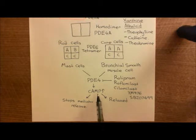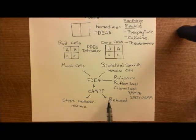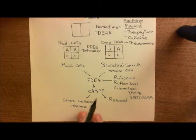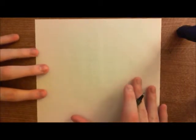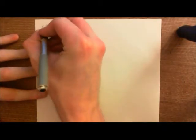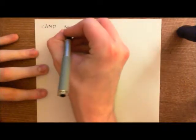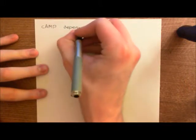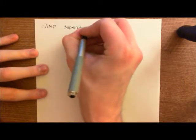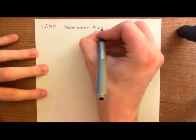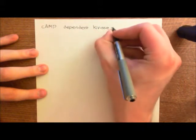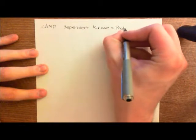We now want to look at why an increase in cyclic AMP within the cytoplasm of the bronchial smooth muscle cells helps to keep them relaxed. Cyclic AMP is going to activate an enzyme known as the cyclic AMP-dependent protein kinase, which is now more famously called protein kinase A.